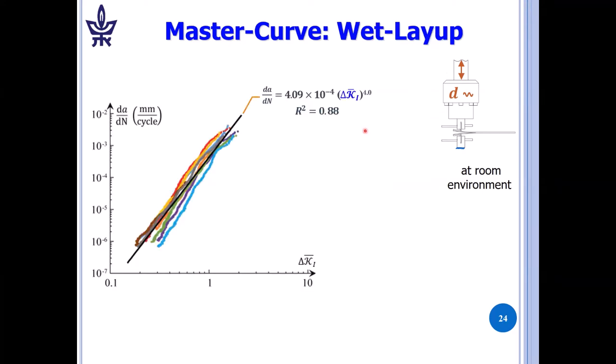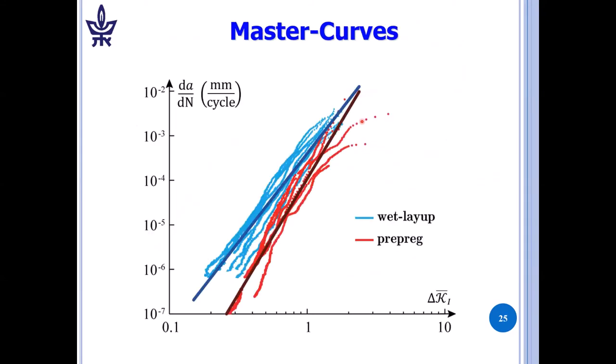For the wet layup, which I haven't showed you all the data, we get a different master curve, reminding you of all the parameters. This is delta G1 effective threshold. We have a slope of four, which is even better.